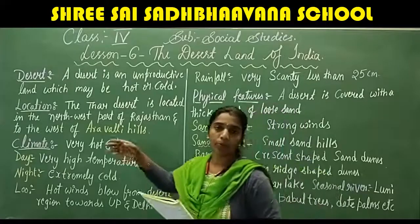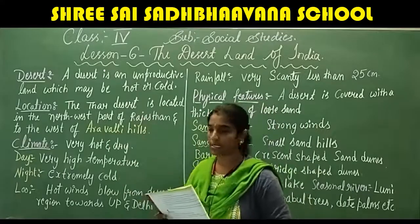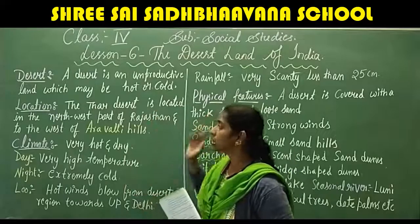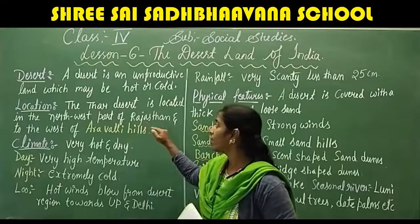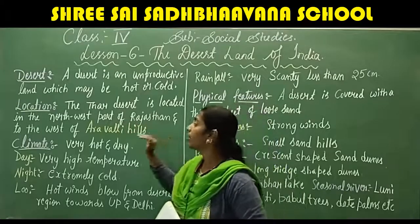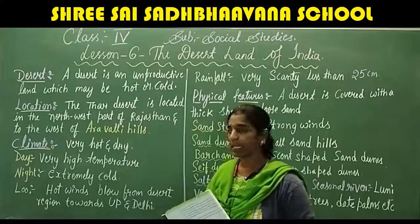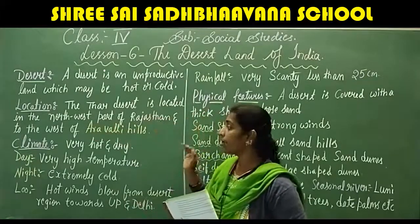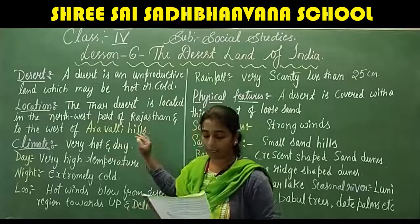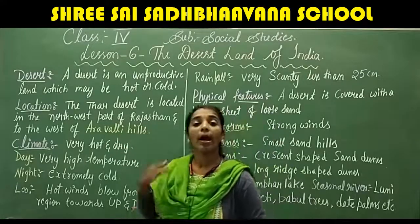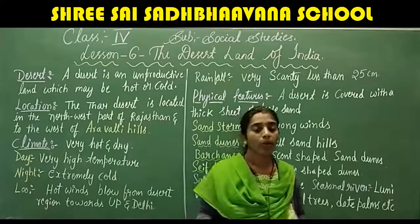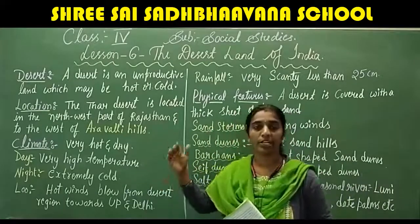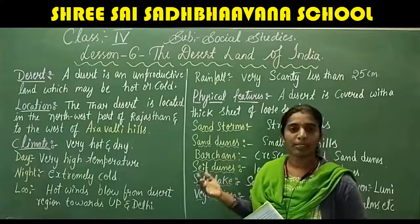Now let us study about the location. The Thar Desert is located in the north-west part of Rajasthan, to the west of the Aravali hills. It is an extension of the Arabian Desert of Saudi Arabia.